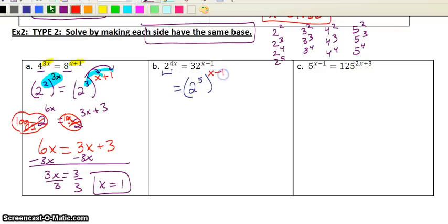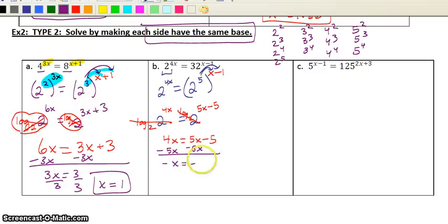This one is already nicely written for us. I'm going to distribute my five quick. So I've got two to the five x minus five exponent there. And on this side, two to the four x exponent. Now, I would take log base two of both sides. A shortcut is, as soon as you get it so they have that same base, the powers are just equal to each other. So I got four x equals five x minus five. Then go through and solve it. I get negative x equals negative five. Divide by negative one. X equals five this time.